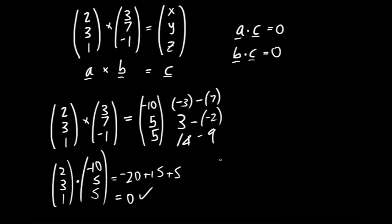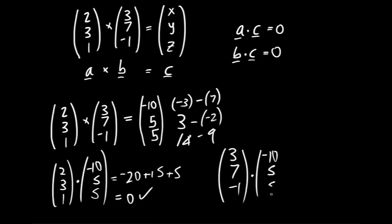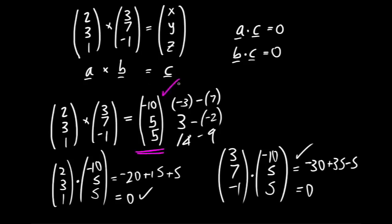For thoroughness, also check B · C: 3×(-10) + 7×5 + (-1)×5 = -30 + 35 - 5 = 0. It passes both tests, so we're very confident the cross product is correct. One word of warning: this test won't catch errors if you've used the wrong VNV pattern from the start. So remember the VNV pattern, and this dot product test will catch specific multiplication slips. That's the end of the video.